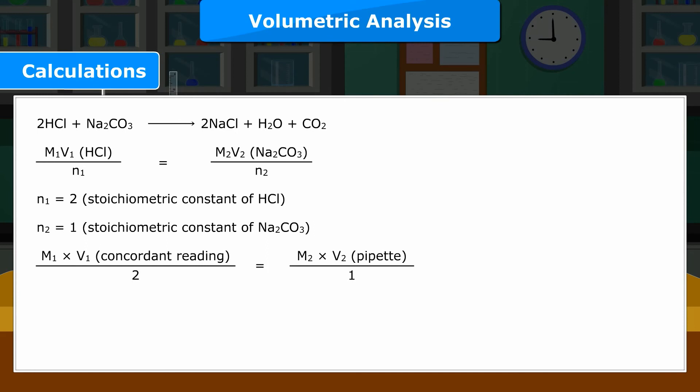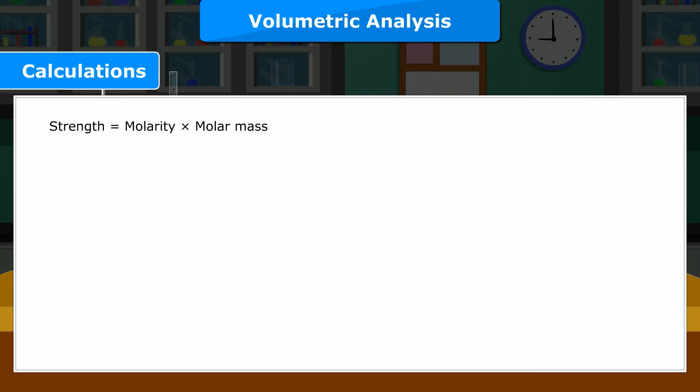M1 × V1(concordant reading)/2 = M2 × V2(pipette)/1. M1 × X/2 = (1/20) × 10/1, therefore M1 equals the calculated molarity. Strength = Molarity × Molar Mass. Strength = calculated value × 36.5 gram per litre.